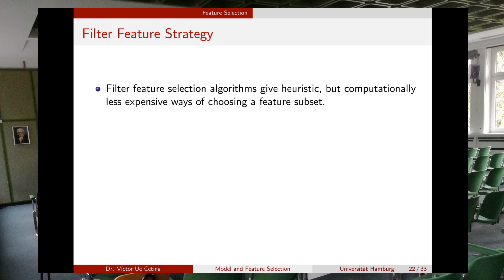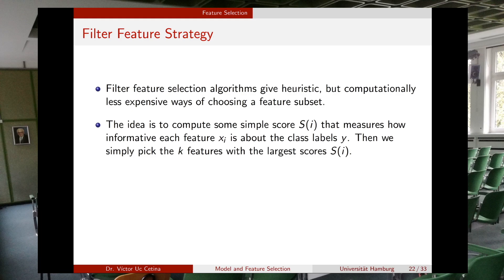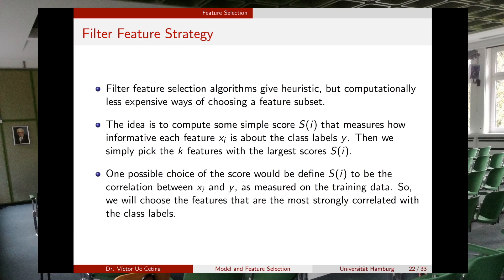The idea is to compute a simple score for each feature i that measures how informative each xi is about the class labels y, then pick the top k features with the largest scores. One possible choice of score is the correlation between feature xi and label y as measured on the training data, choosing features most strongly correlated with the class labels.